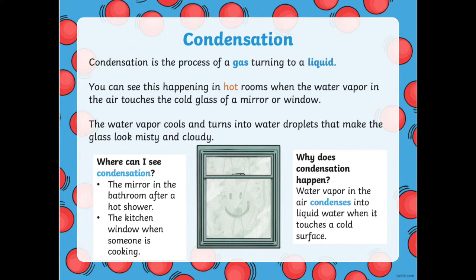Where can I see condensation? You could see condensation in the mirror in the bathroom after a hot shower, or you could see condensation on your kitchen window when someone is cooking. Why does condensation happen? Water vapour in the air condenses into liquid water when it touches a cold surface. This is water vapour, the gas, turning back to a liquid.